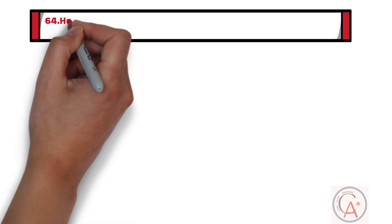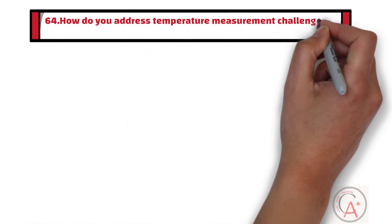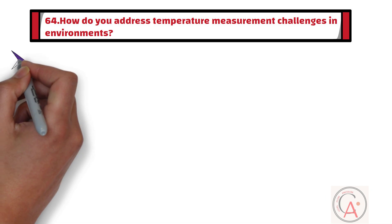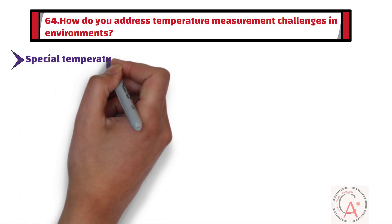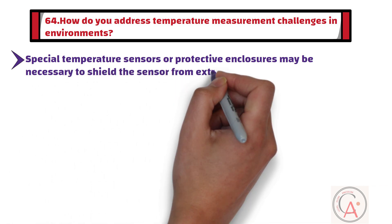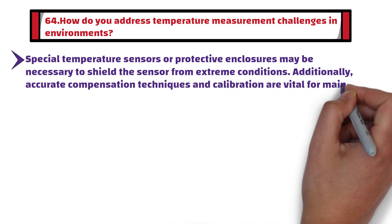Question number 64: How do you address temperature measurement challenges in environments with extreme conditions, such as high radiation or extreme cold? In such environments, special temperature sensors or protective enclosures may be necessary to shield the sensor from extreme conditions. Additionally, accurate compensation techniques and calibration are vital for maintaining measurement accuracy.